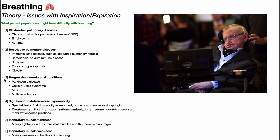The third patient population is those with progressive neurological conditions where there is damage to the nervous system. The diaphragm is innervated by the phrenic nerve — each half of the diaphragm, termed a hemidiaphragm, is innervated by the ipsilateral phrenic nerve. So the left hemidiaphragm receives motor innervation from the left phrenic nerve and vice versa. These conditions can cause eventual damage to the phrenic nerve, making it more difficult to breathe. Examples include Parkinson's disease, Guillain-Barré syndrome, ALS, and multiple sclerosis.